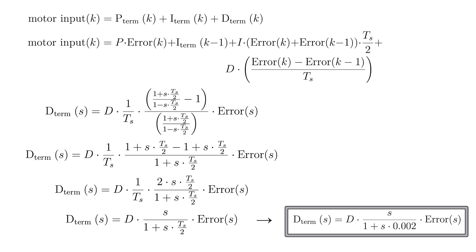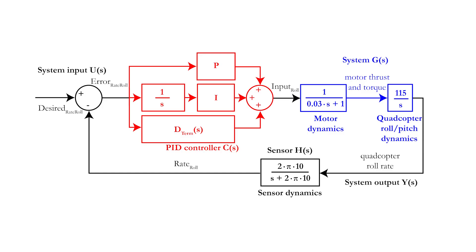Because Ts is equal to 4 ms for our control loop, the transfer function for the D term is equal to the D constant multiplied by the complex variable s, divided by 1 added with s multiplied by 0.002. By inserting the transfer function for the D term, we have finally completed our control loop.